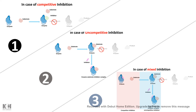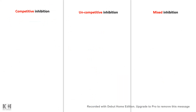Now let's look at how the Michaelis-Menten equation looks under all these circumstances. For competitive inhibition, the equation is: V0 = Vmax·[S] / (α·Km + [S]). Instead of Km, the apparent Km is now α·Km, so Km has increased — for any positive value of alpha, Km would be increased.